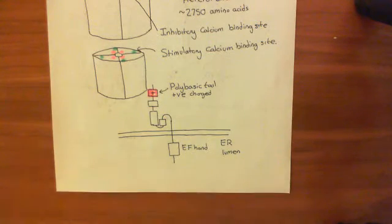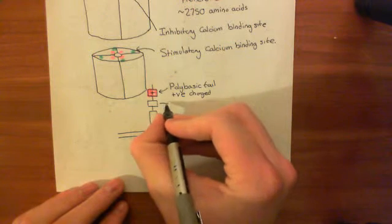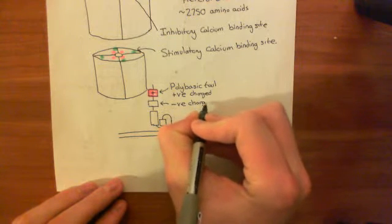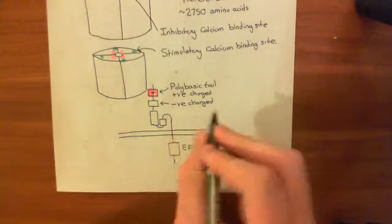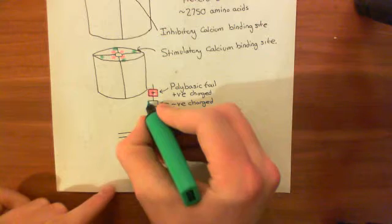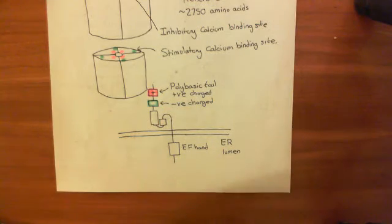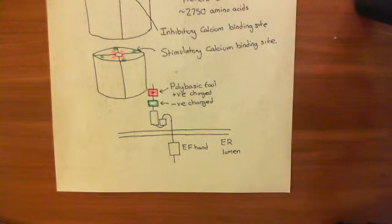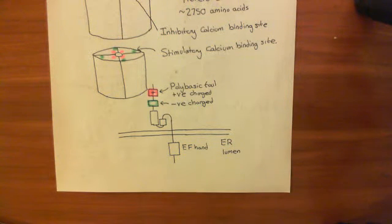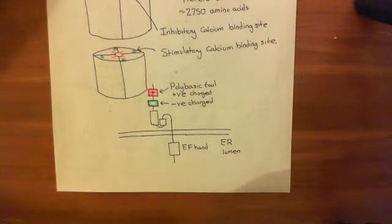The next region down is the complete opposite — it's negatively charged. We're going to see how this region is important later. It's basically important for stopping store-operated calcium entry if calcium levels inside the cytoplasm are toxically high, because you don't want store-operated calcium entry to be on if calcium inside the cytoplasm is already dangerously high. The cell doesn't care if calcium is too low in the ER if calcium in the cytoplasm is dangerously high.